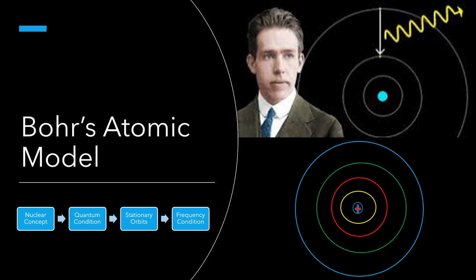Second postulate explains the quantum condition, according to which the total angular momentum of the revolving electron is integral multiple of h by 2π, where h is Planck's constant. Hence mvr is equal to nh by 2π, where n is equal to 1, 2, 3, and so on.